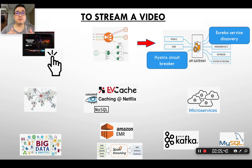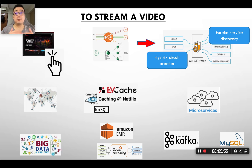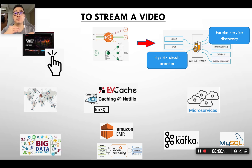In evolved technology or architecture, these can be replaced. For example, you can replace Zuul with Spring Cloud Gateway, or Eureka with Nacos maintained by Alibaba. You can even use a cloud-native approach, for example AWS API Gateway to handle routing, filtering, rate-limiting, and authentication/authorization. Or you can use a service mesh if it's deployed on a Kubernetes platform.